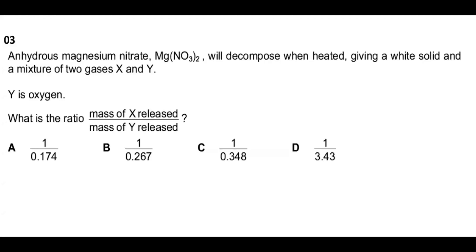Next question: anhydrous magnesium nitrate, Mg(NO₃)₂, decomposes when heated, giving a white solid and a mixture of two gases X and Y, where Y is oxygen. What is the ratio of mass of X released to mass of Y released? X is NO₂. The decomposition produces 2 moles of NO₂ and 0.5 moles of O₂.